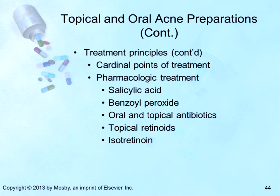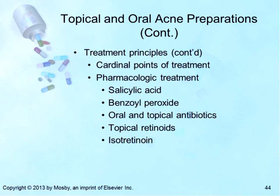Benzoyl peroxide is an oxidizing agent that is bactericidal, available OTC and in higher strengths by prescription. It may be used with salicylic acid, topical or oral antibiotics, or topical retinoids. The 2.5% concentration seems to be as effective as higher concentrations but is less irritating. Use water-based rather than alcohol-based preparations to reduce irritation. Many topical antibiotic preparations are used for mild to moderate acne. Doxycycline and minocycline are often more effective than tetracycline. Other topical antibiotics include clindamycin and erythromycin — both are antibacterial and anti-inflammatory; clindamycin is less irritating. Topical antibiotics are used for mild papular acne and for patients who cannot tolerate oral antibiotics or to wean patients from oral to topical preparations.